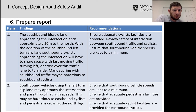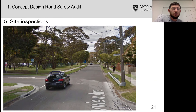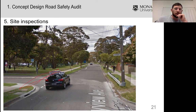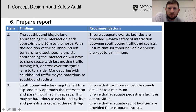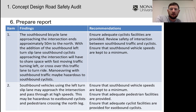Finding number two: southbound vehicles approaching the intersection at high speeds may be a hazard to eastbound cyclists and pedestrians crossing the north leg. Once the slip lane is in, traffic coming from the north will be at higher speed and could be hazardous to cyclists and pedestrians going east-west on Bayview Avenue. The recommendation is to keep speeds to a minimum — don't design it like a racetrack — and to ensure adequate pedestrian and cyclist facilities.